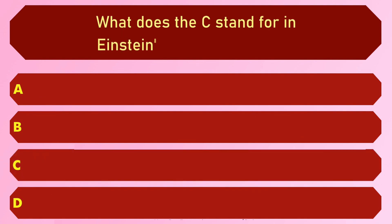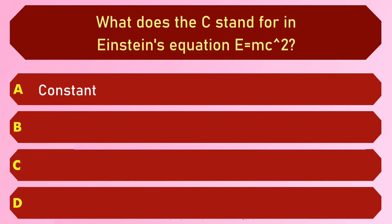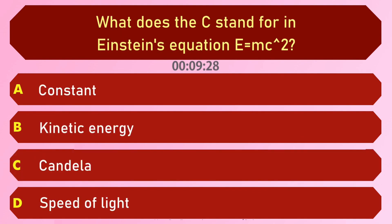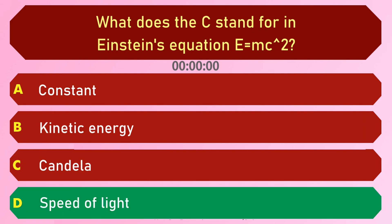What does the C stand for in Einstein's equation E = mc²? Options are: A) Constant, B) Kinetic energy, C) Candela, and D) Speed of light. The answer is option D, Speed of light.